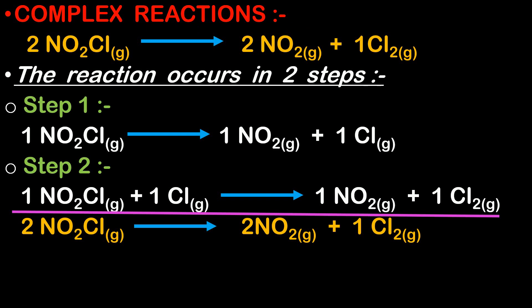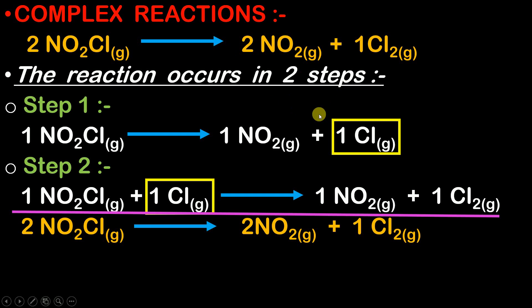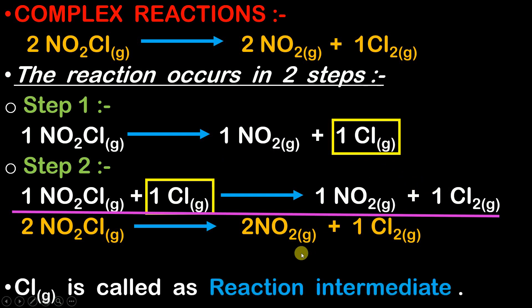After understanding complex reactions, observe this chlorine gas. It is produced in step one, but in step two it gets consumed — it reacts to help form the products. This chlorine gas is therefore called the reaction intermediate. Any species which appears in one step and gets consumed in another step is called a reaction intermediate.